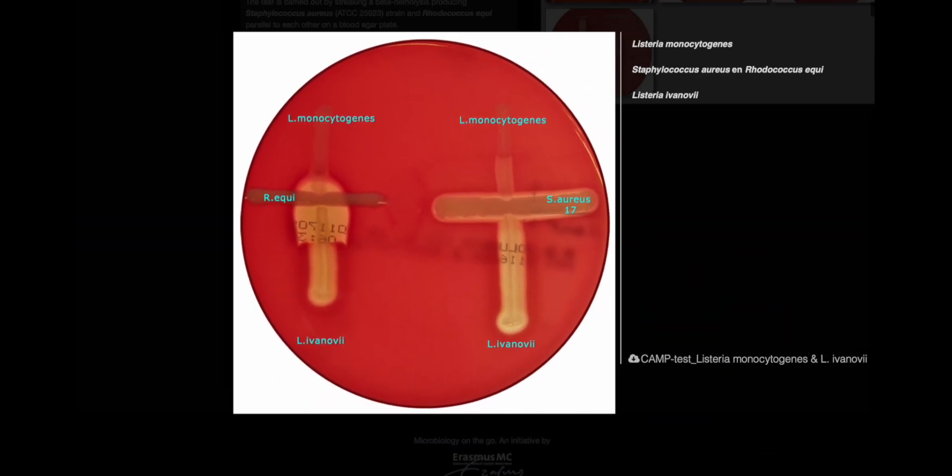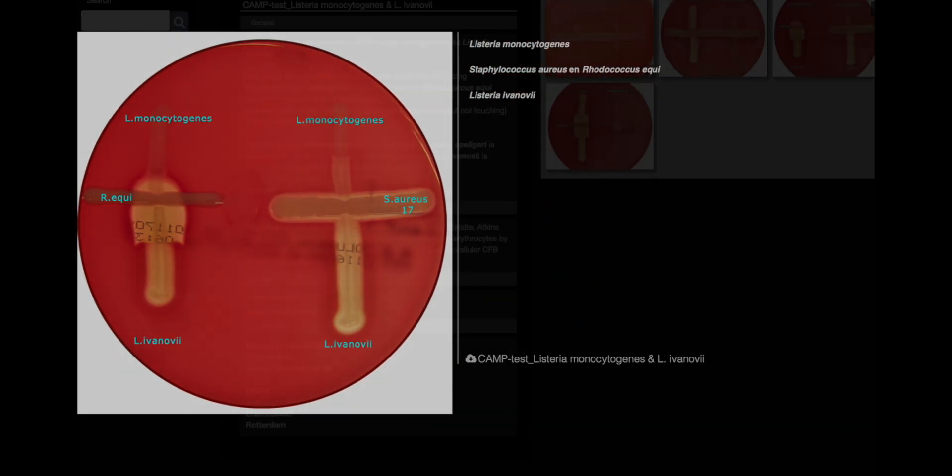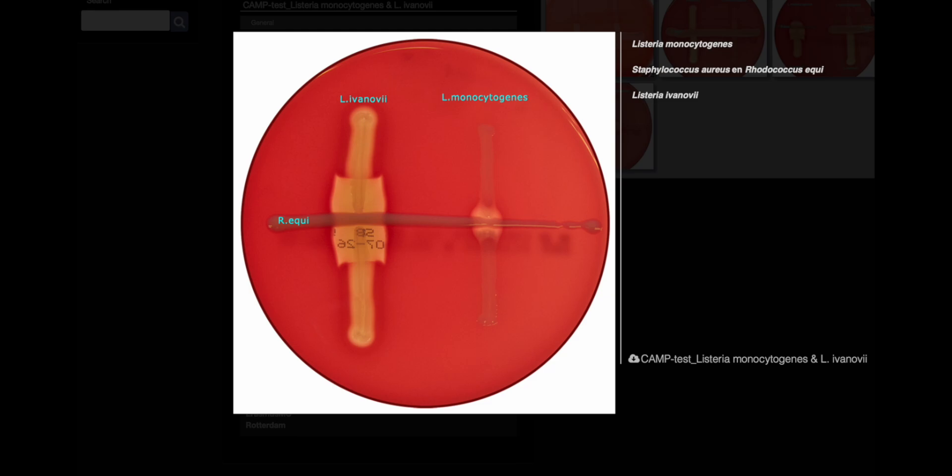Synergistic lysis, a cellular art, beta-hemolysin and CFP play their part. So let the CAMP test its secrets unveil, Listeria's dance, where patterns never fail.